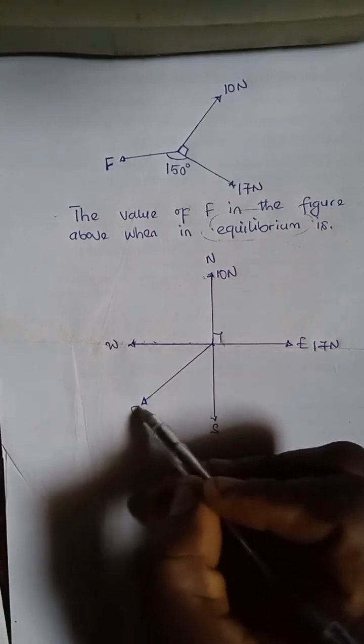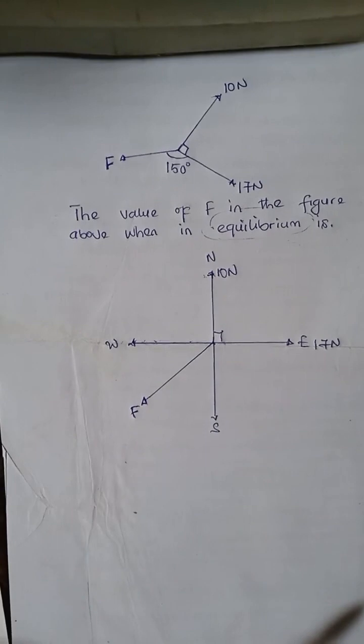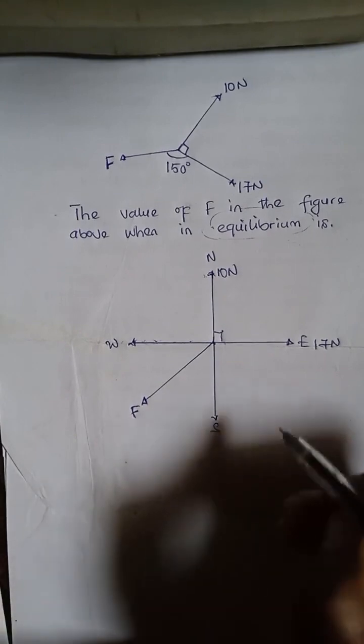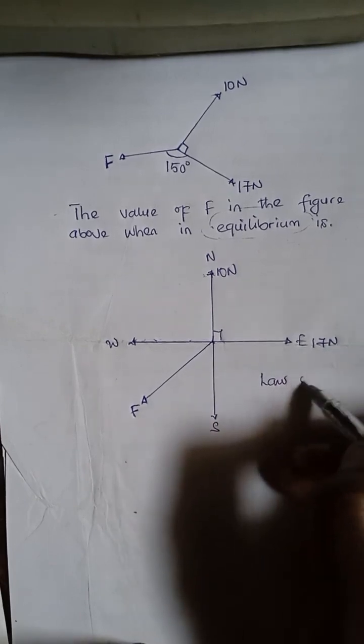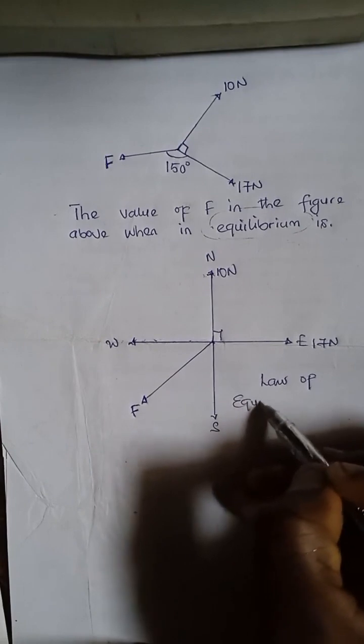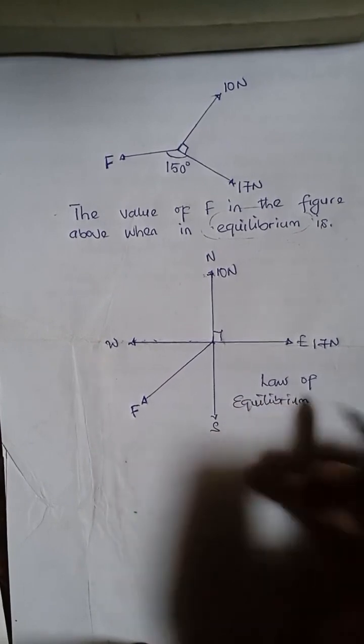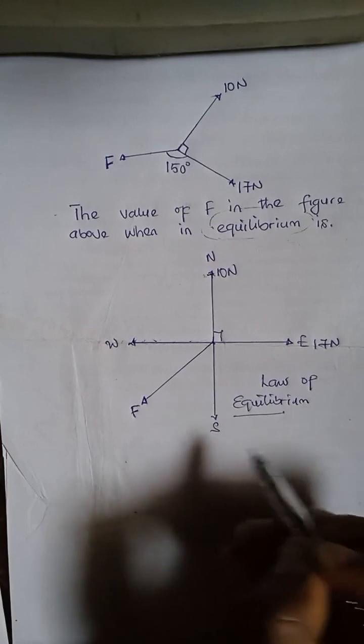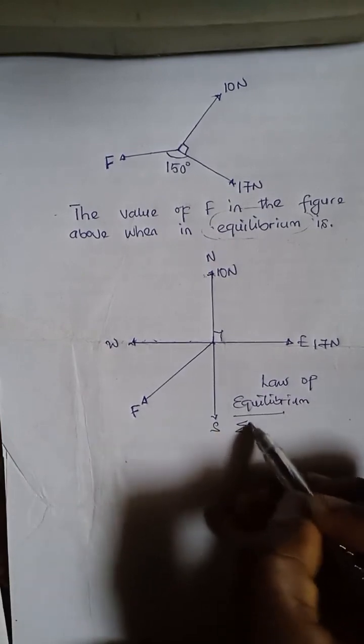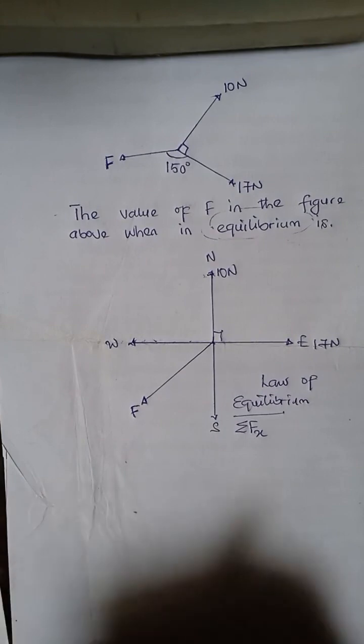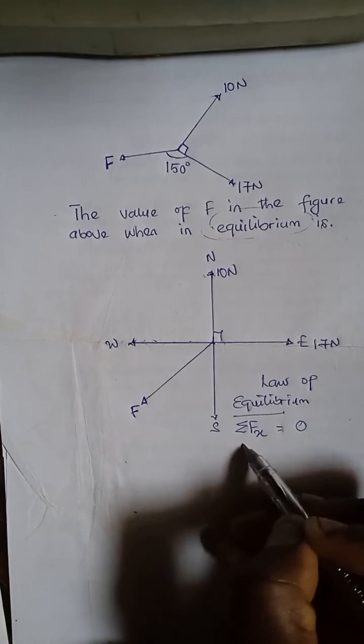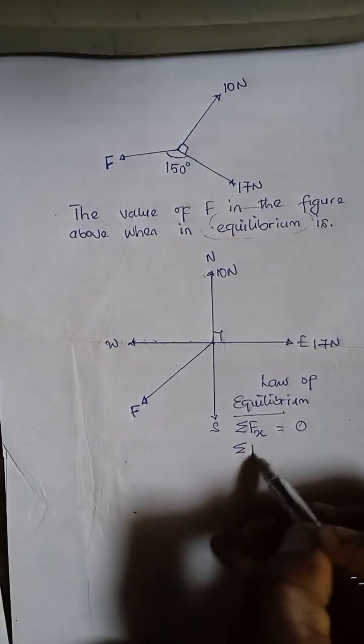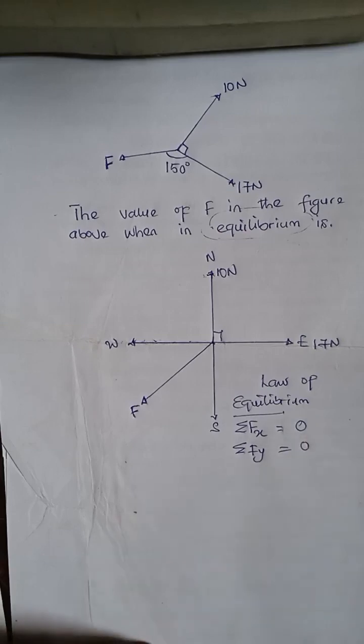This is where I'm going to place my F. Now, the second thing I'm going to do is to write that the law of equilibrium states, by the law of equilibrium, the total forces in the x-axis, which is in the horizontal direction, should sum up to 0. And likewise, the total forces in the y direction should also sum up to 0. So, that is what we are going to do.